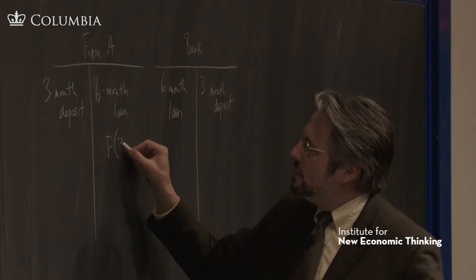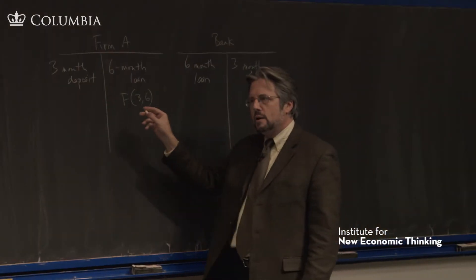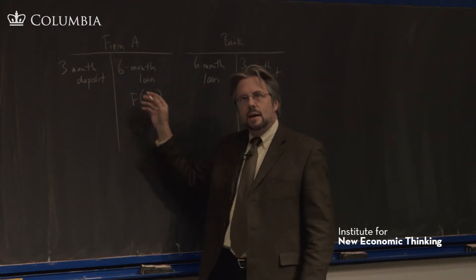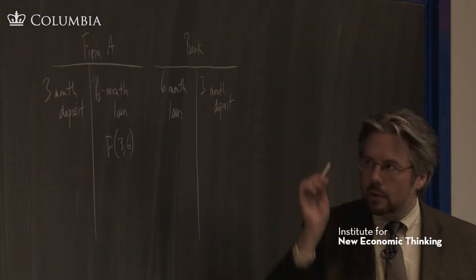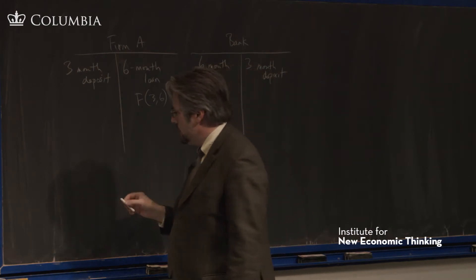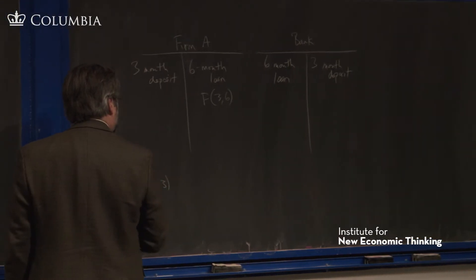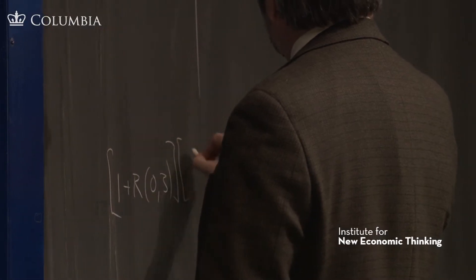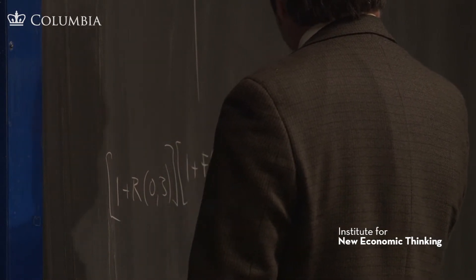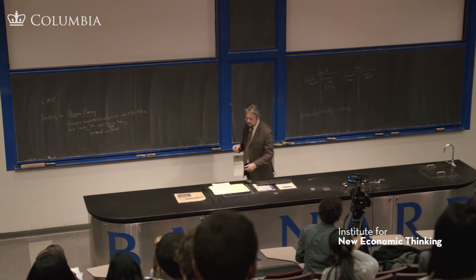And the notation we used for that, for the interest rate on that loan, was F36. So that it's a forward, you're locking in a three-month interest rate three months ahead by doing this swap of IOUs. And that F is defined by the forward interest parity: one plus R03, one plus F36 equals one plus R06.